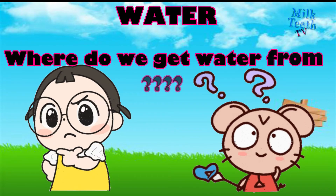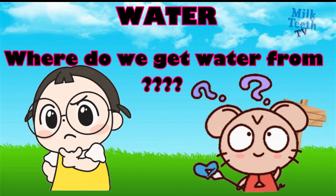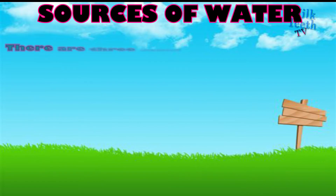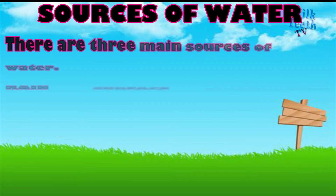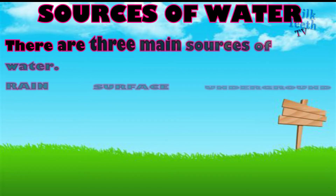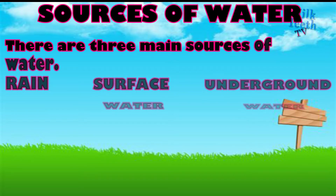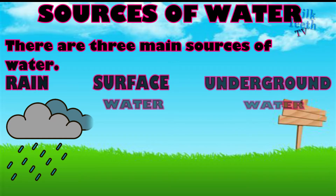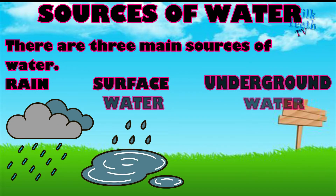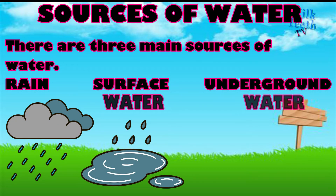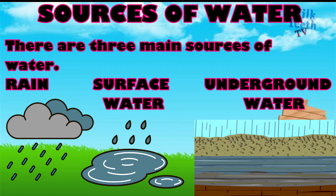Where do we get all that water from? There are many sources of water. The three main sources of water are rain, surface water, and underground water.